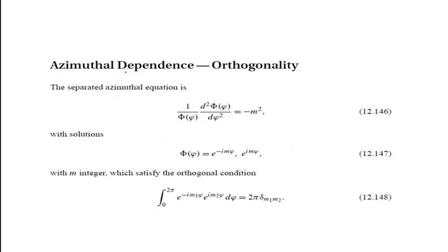First, consider the azimuthal dependence part — azimuthal angle means φ, and the polar angle is θ. The separated azimuthal equation is (1/Φ)(d²Φ/dφ²) = −m², and the solutions are Φ(φ) = e^(imφ), where m is an integer. This satisfies the orthogonality condition: the integral from 0 to 2π of e^(−im₁φ) e^(im₂φ) dφ equals 2π δ(m₁, m₂).